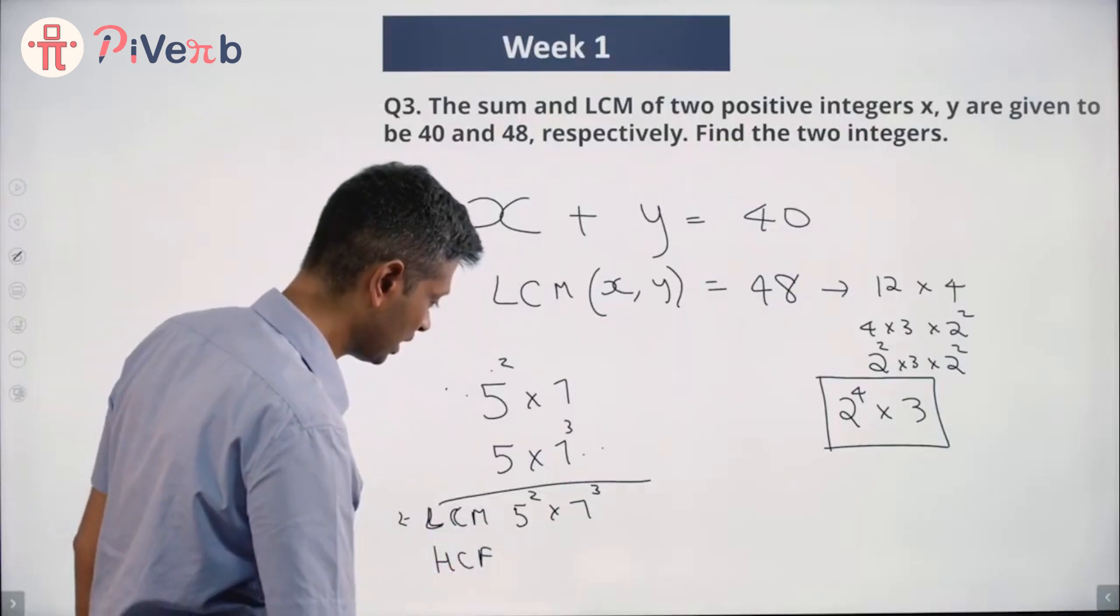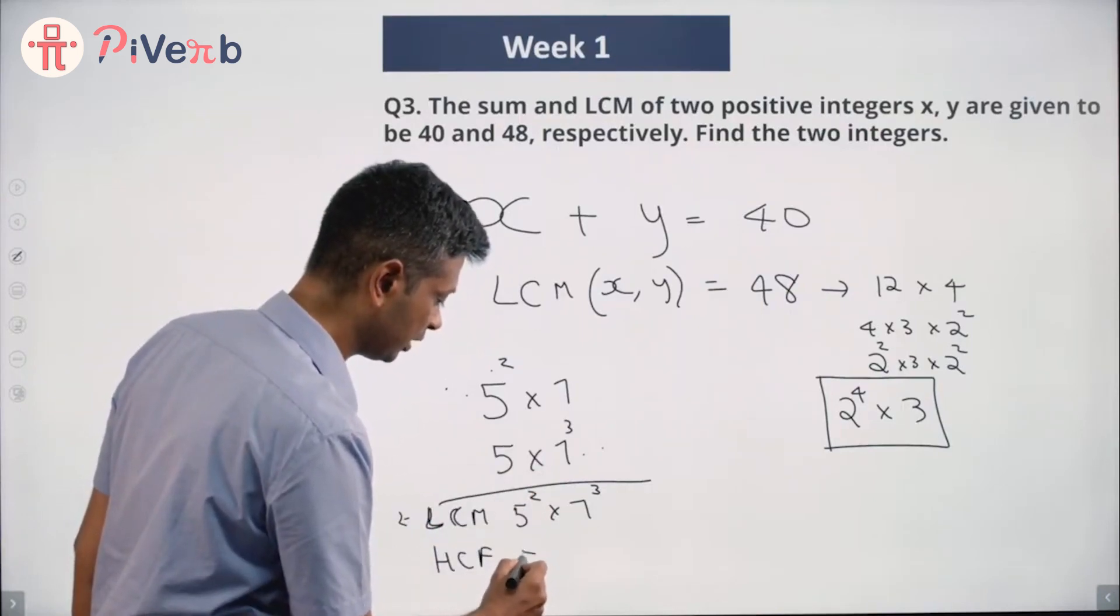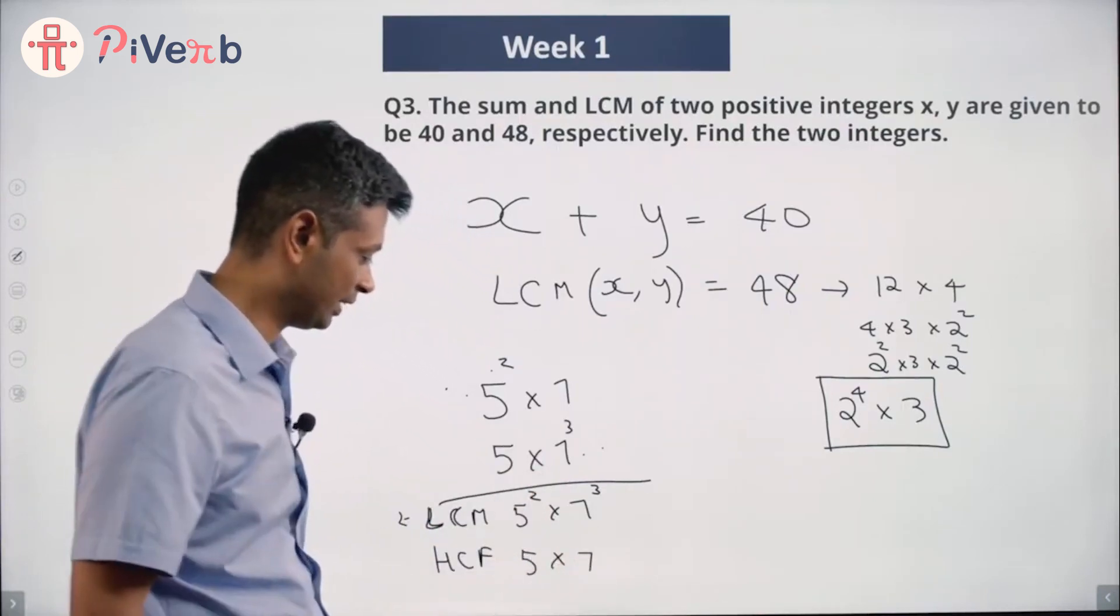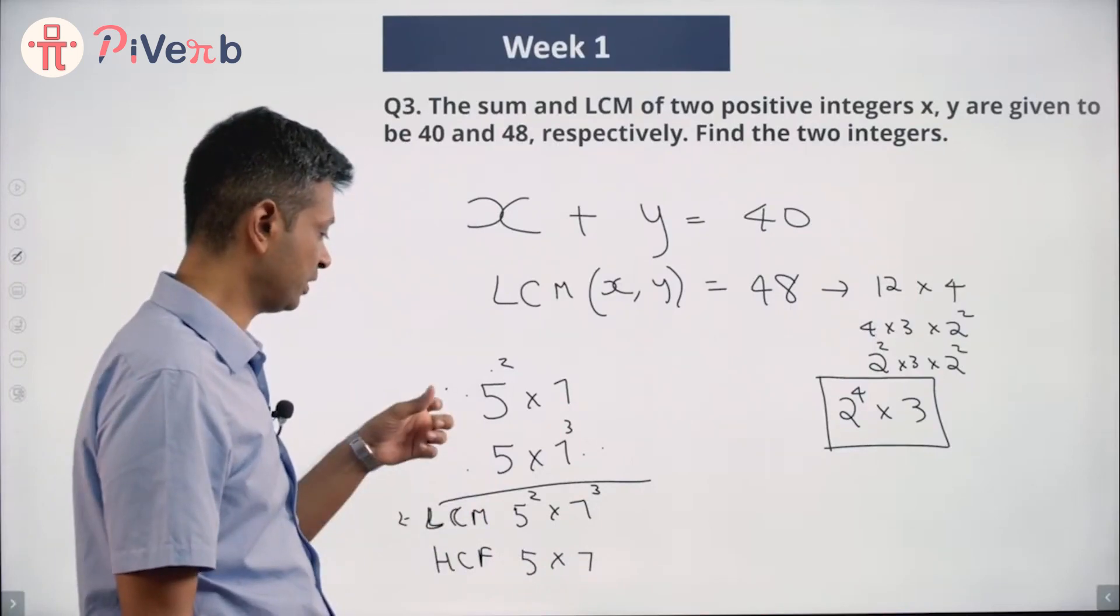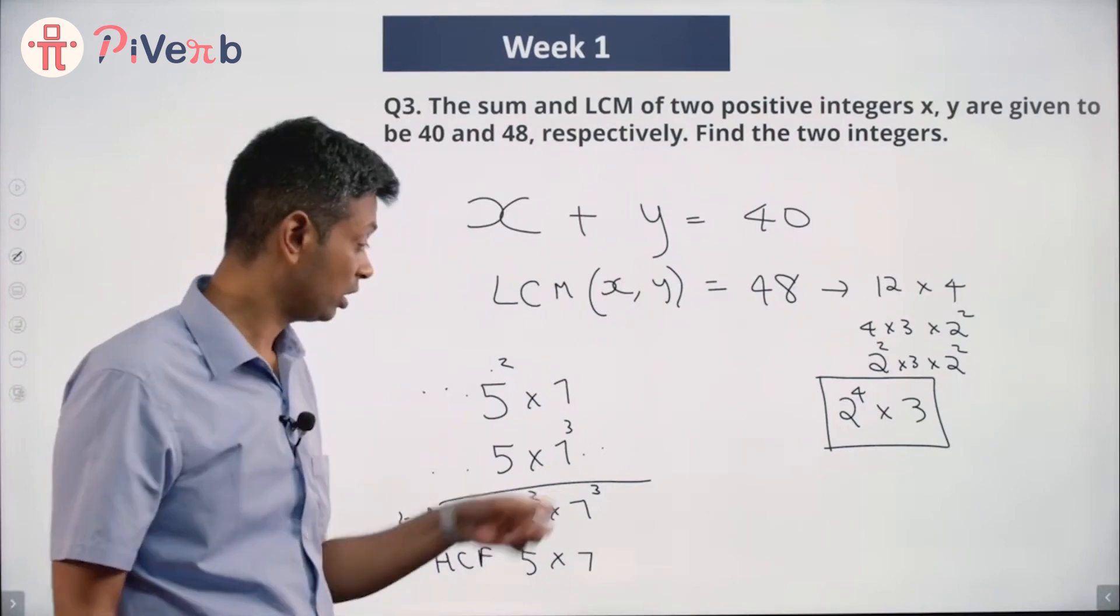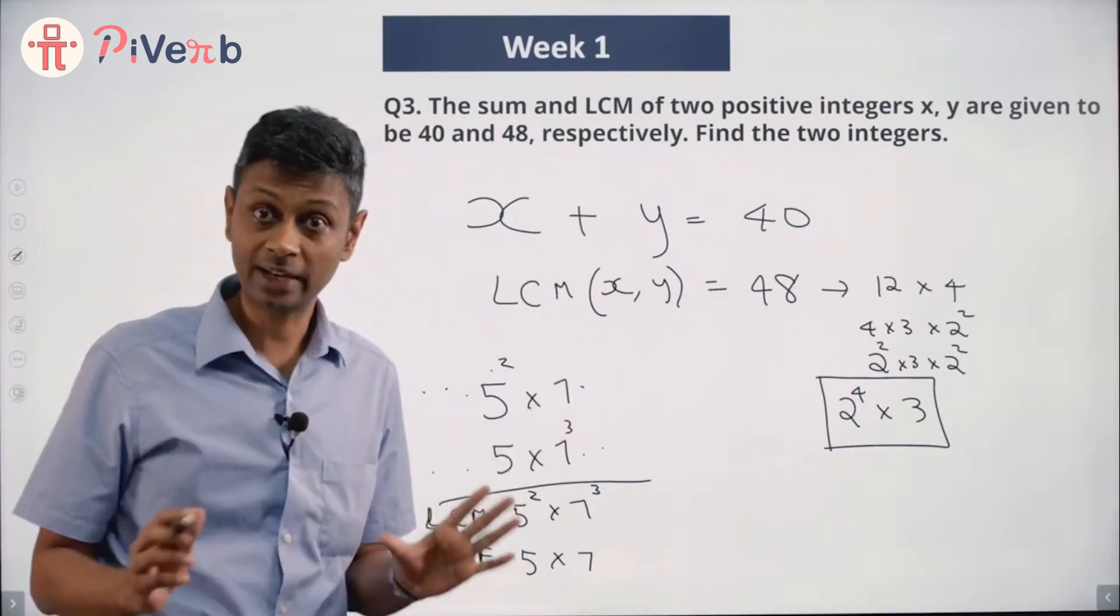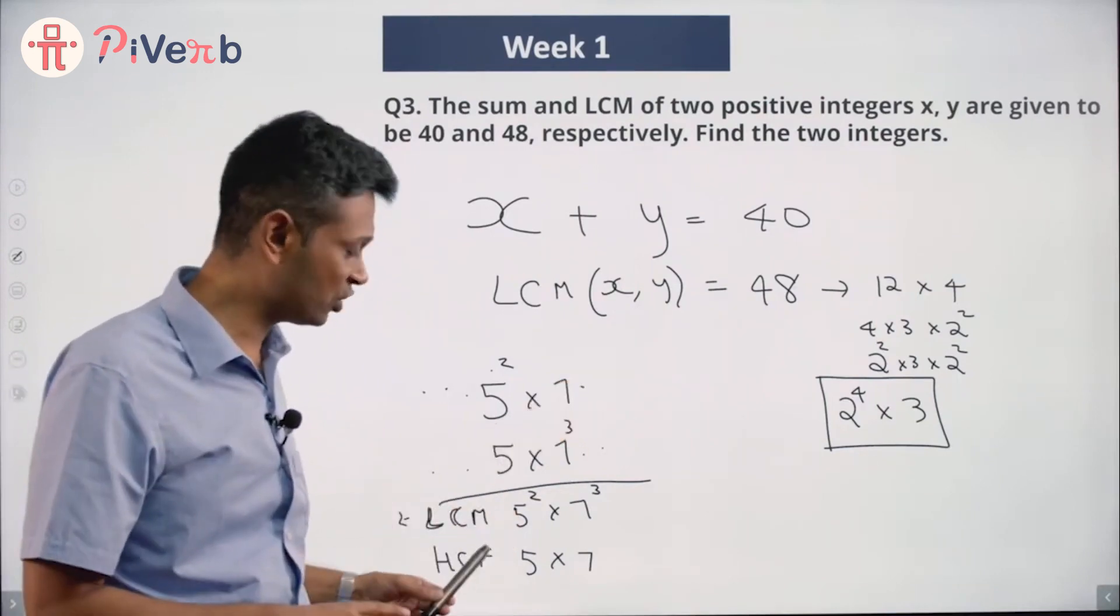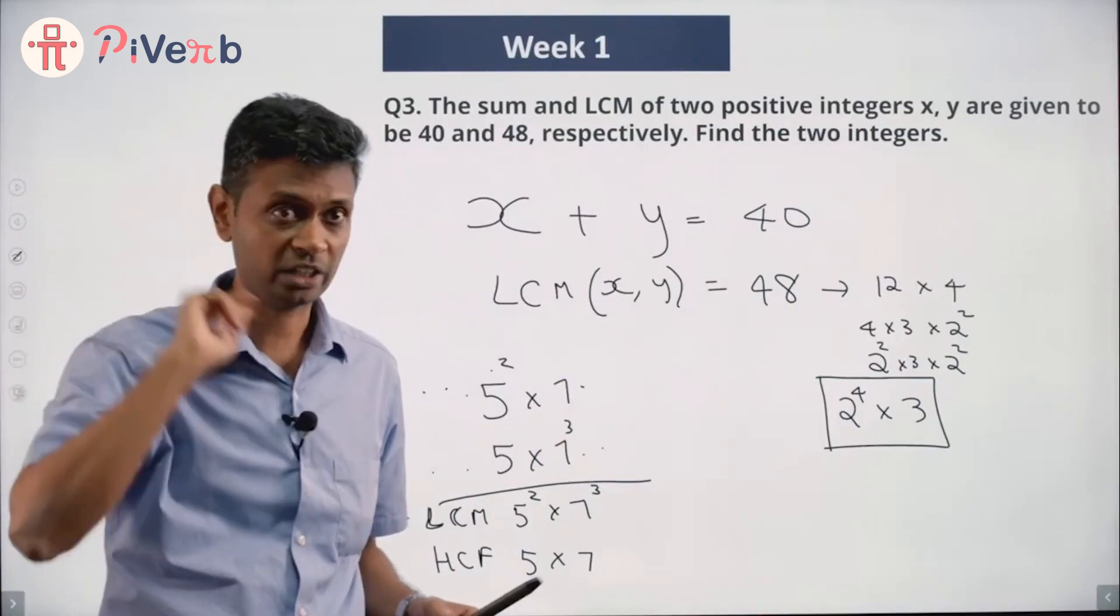HCF would be 5 into 7. 5 into 7 divides this, 5 into 7 divides this. If I had even 5 squared, it won't divide this. If I had 7 squared, it won't divide this. That is the idea. LCM and HCF, think in terms of prime factorization.